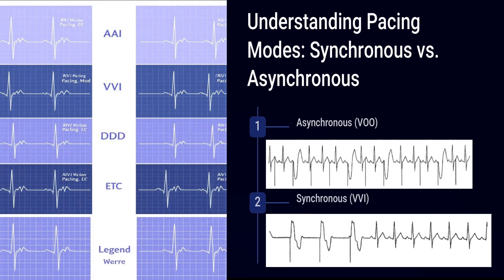Looking at the ECG of an asynchronous mode, the pacemaker will emit output at a fixed rate regardless of electrical activity. So we will see pacemaker spikes at fixed intervals, which can result in the R-on-T phenomenon. With the pacemaker firing on the T wave, we can trigger V-tach or VF. But in synchronous mode, the pacemaker will emit output only if there is no intrinsic activity — it will inhibit its output when intrinsic activity is detected.